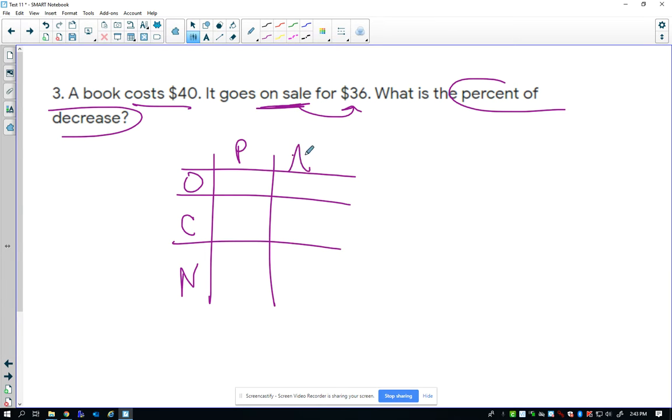We have percent and we have actual. So the original percent is 100. The actual original is what the book costs, and then it goes on sale for $36. So that's the new cost.